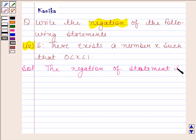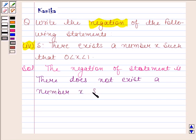Now the negation of the given statement will be there does not exist a number x such that 0 is less than x is less than 1.